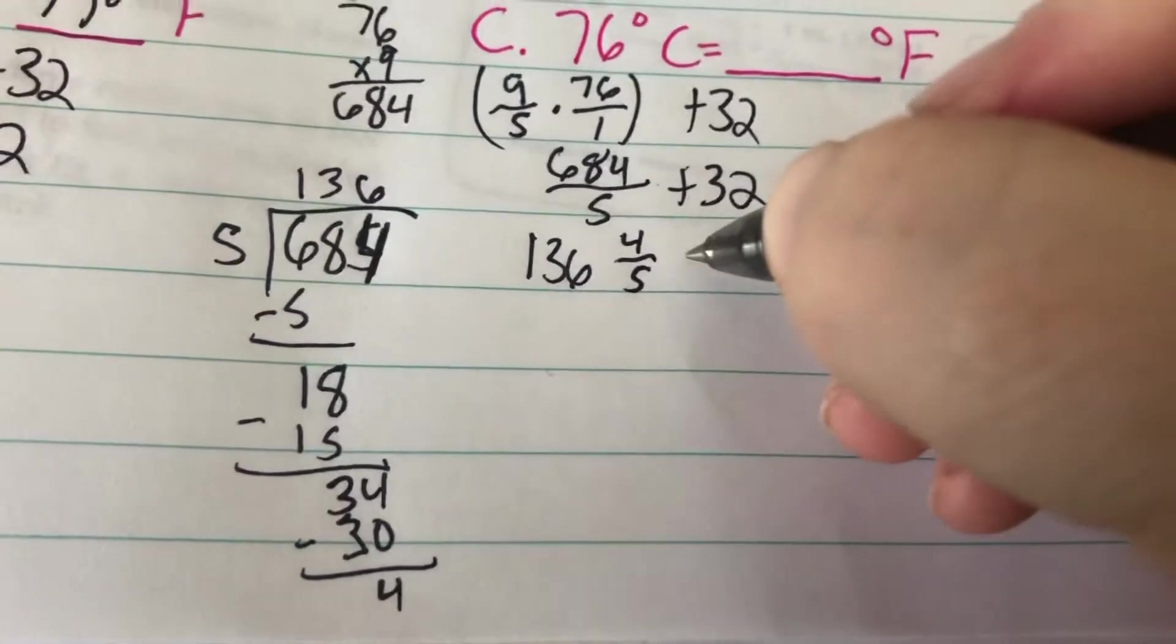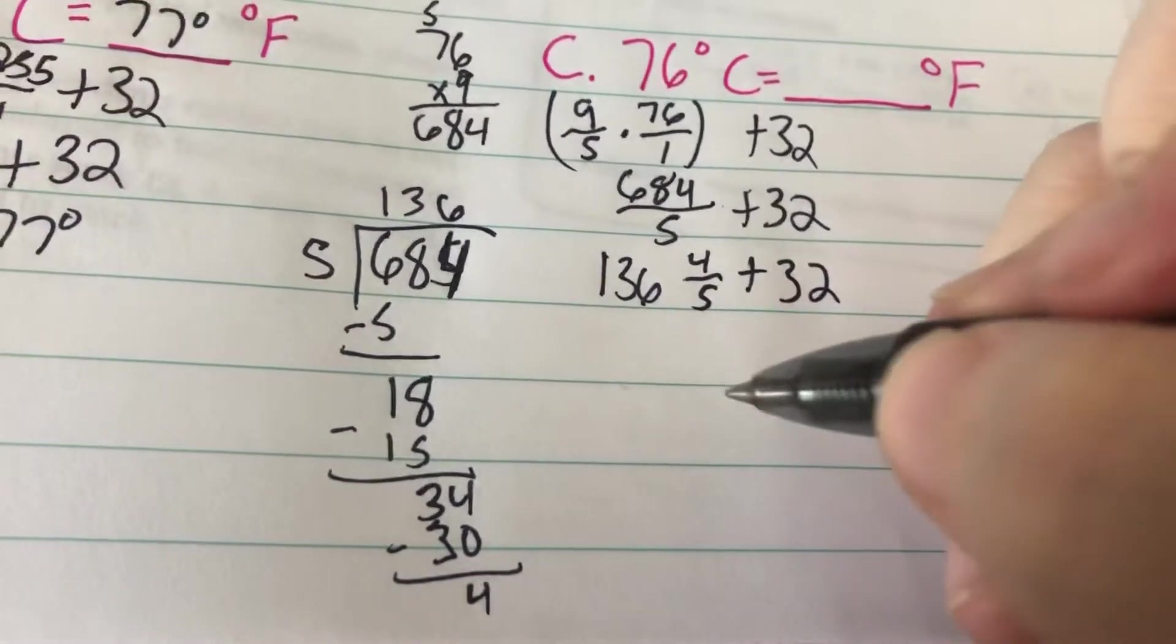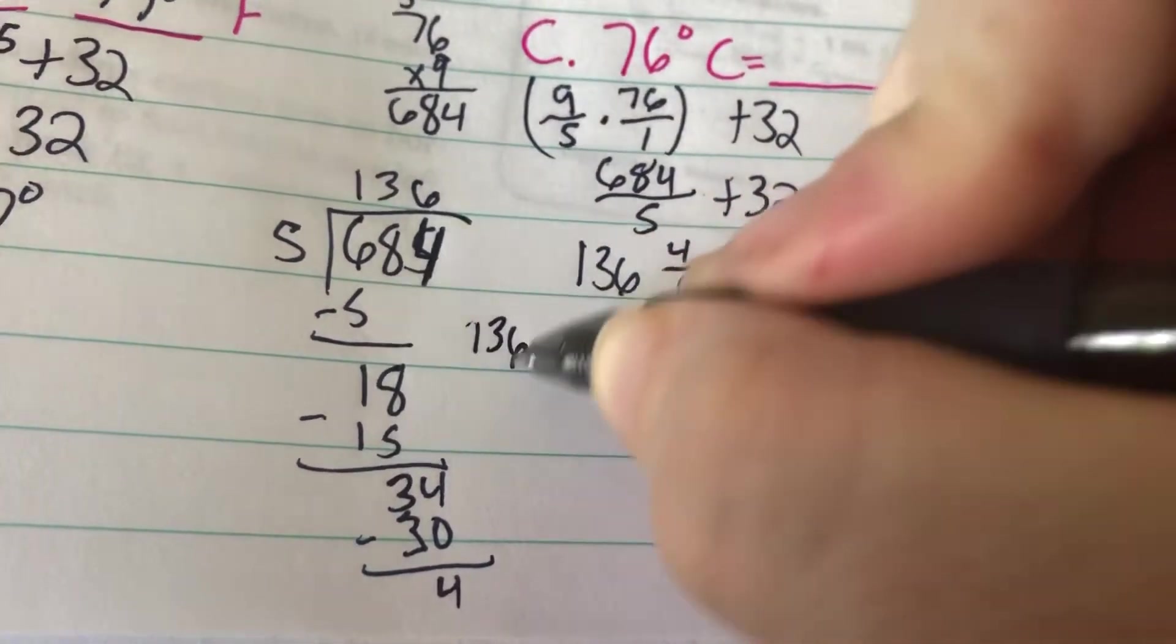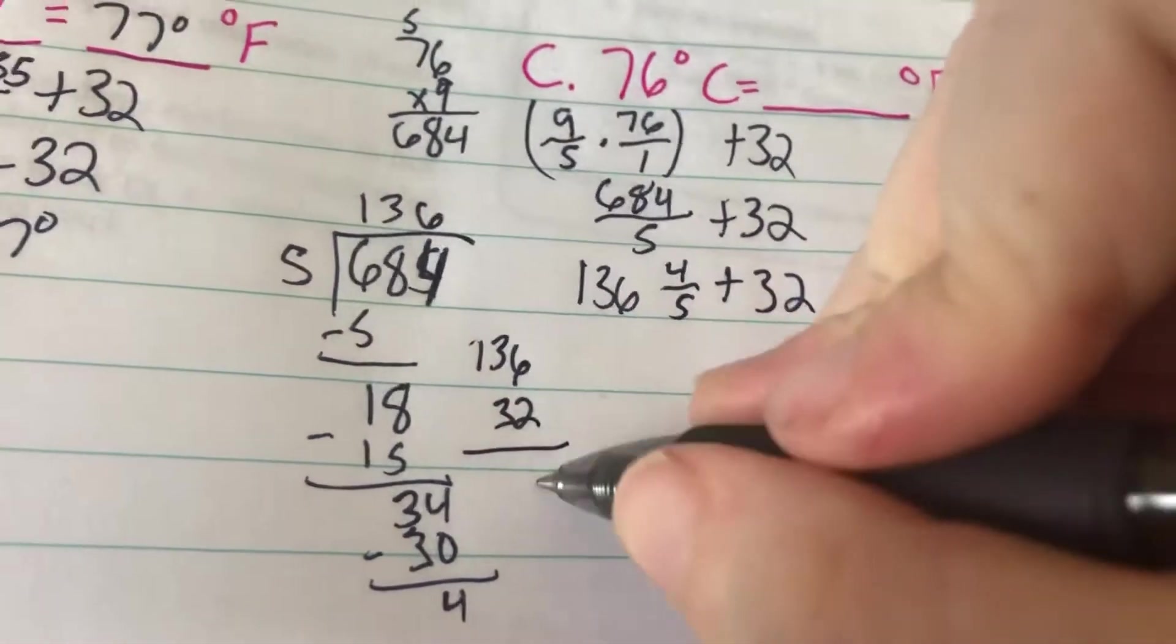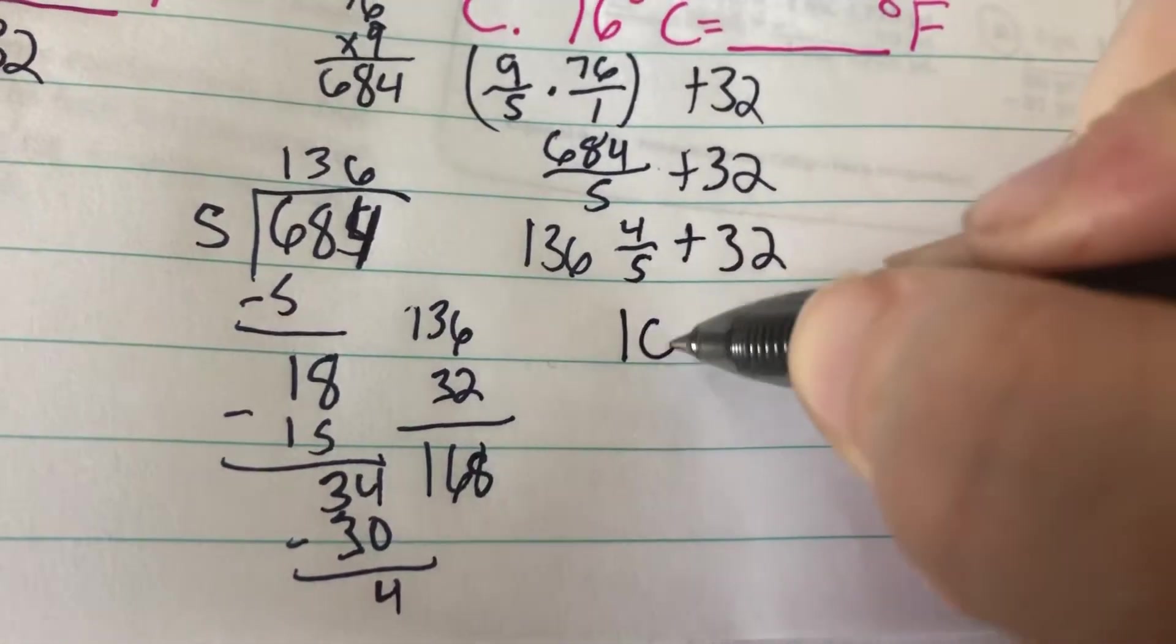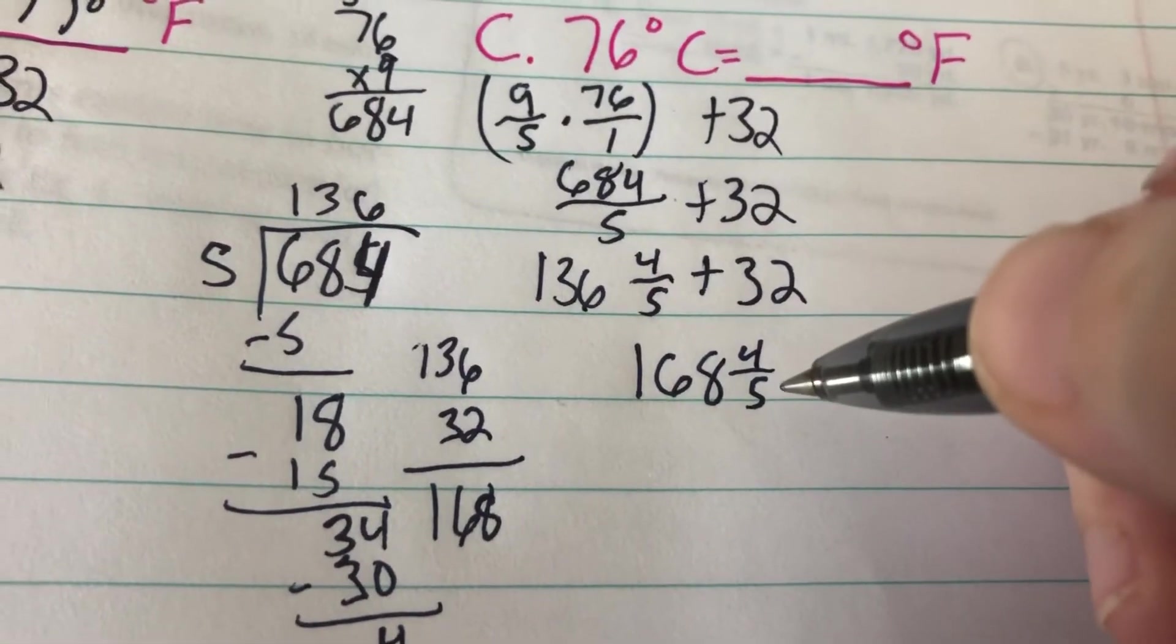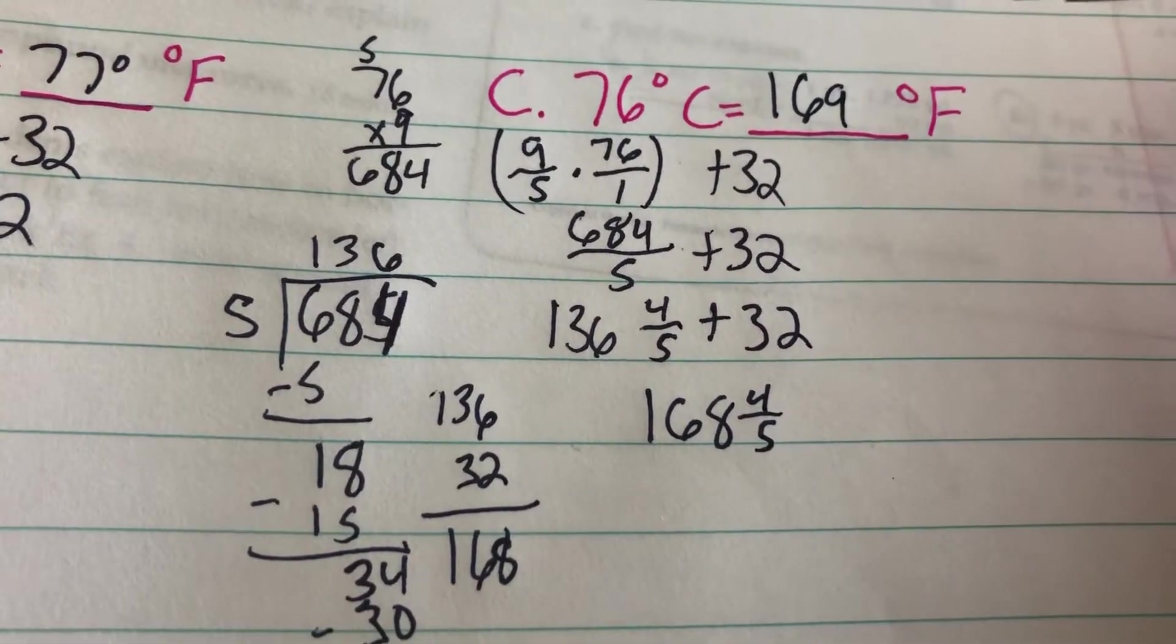So it's going to be 136 and 4/5 plus 32. If I add that up, 136, 32, 8, 6, 1. So it's going to be 168 and 4/5. If I'm rounding that to the nearest degree, that is going to be 169 degrees Fahrenheit.